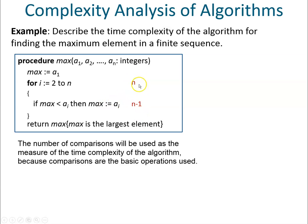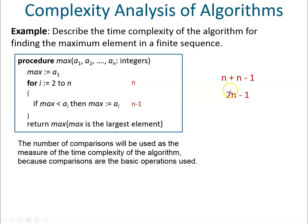Now I need to add these comparisons together to measure the time complexity: n plus (n minus 1), which simplifies to 2n minus 1. The fastest growing term here is n, and the coefficient is 2, so after removing the coefficient my answer is n. The time complexity is Big Theta of n. If I were to draw this on a graph I would get a linear line, so this is a linear function.